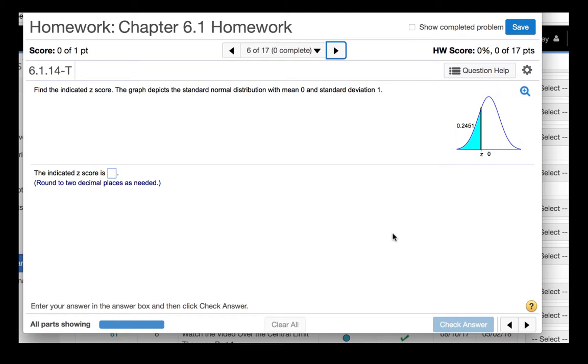Find the indicated z-score. The graph depicts the standard normal distribution with mean 0 and standard deviation 1. So we are to find the z-score that puts 0.2451 of the distribution to the left.